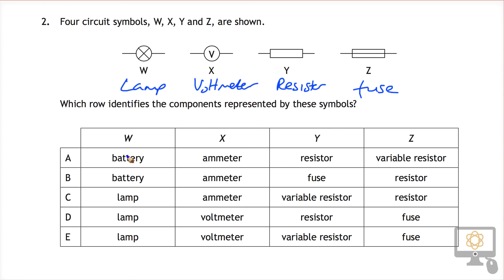So if we go down the list, W is a lamp, so it's C, D or E. X is a voltmeter, so it's D or E. And Y is a resistor, and so therefore the answer is D.